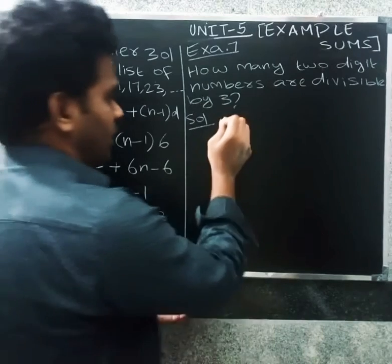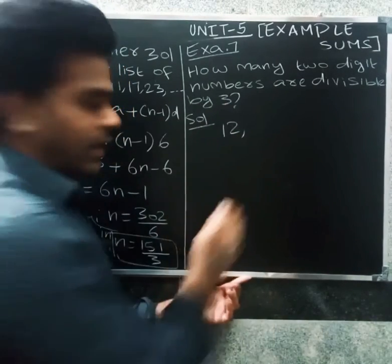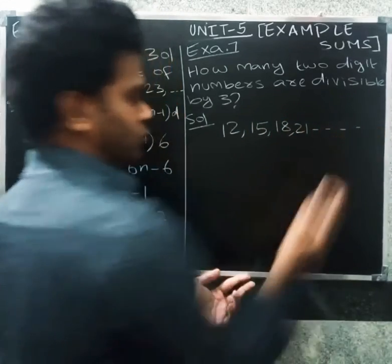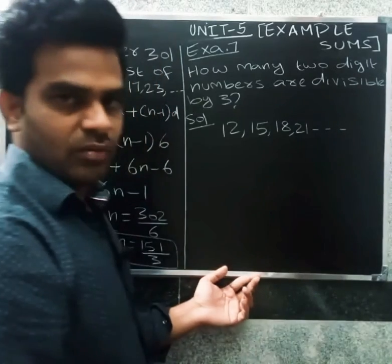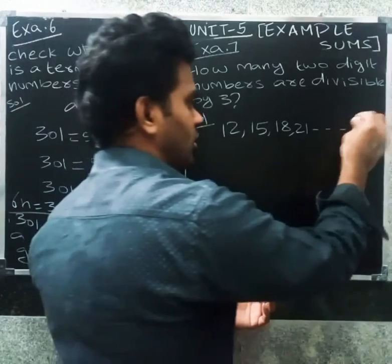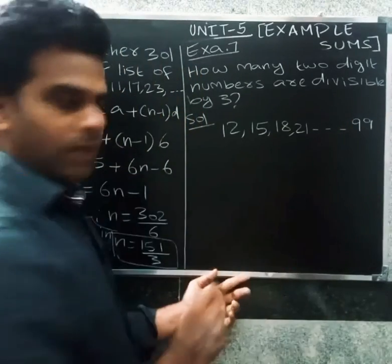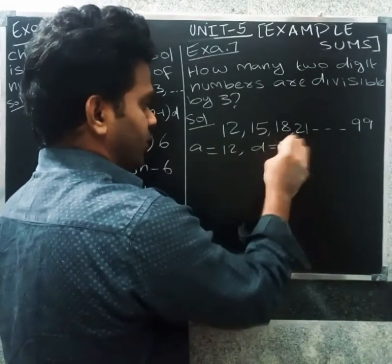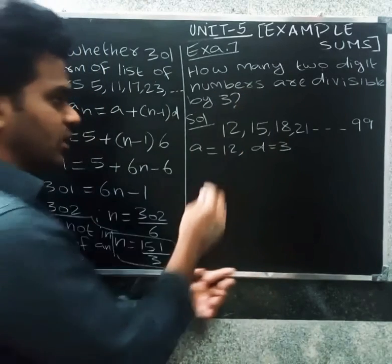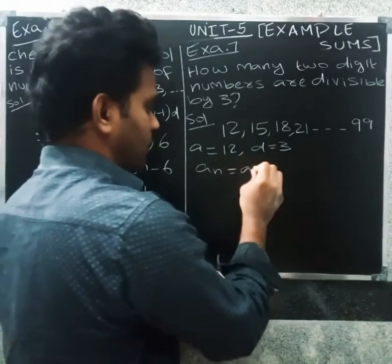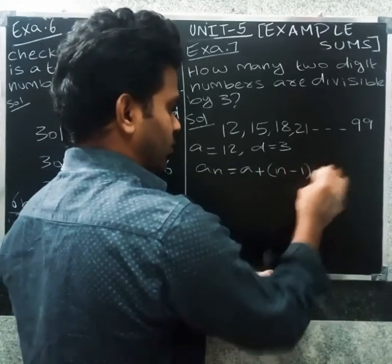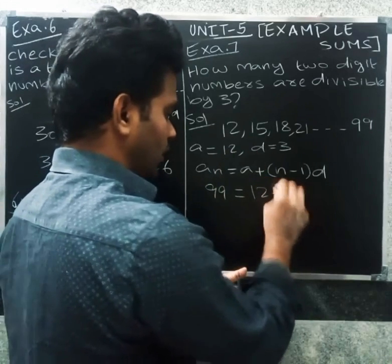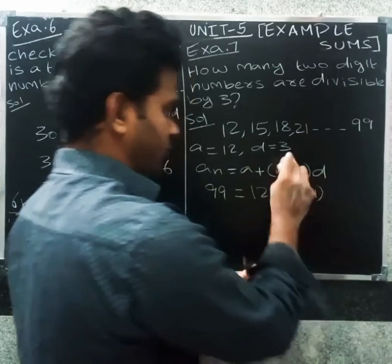The first two-digit number divisible by 3 is 12, then 15, 18, 21, and the last two-digit number divisible by 3 is 99. Using aₙ = a + (n−1)d, we set 99 = 12 + (n−1)×3, where the common difference is 3.